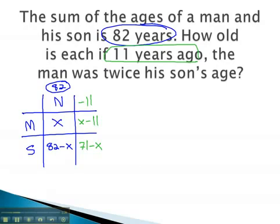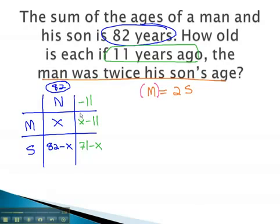We use the rest of the problem to make our equation. The man was, or equals, twice his son's age — 2 times the son. We then replace the man with what he was in the past: x minus 11. Similarly, we get 2 times the son, who in the past was 71 minus x.